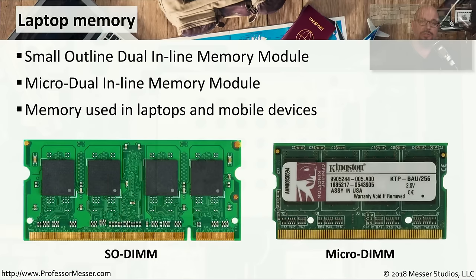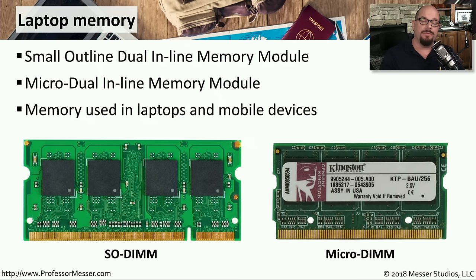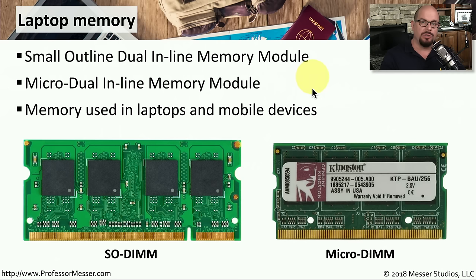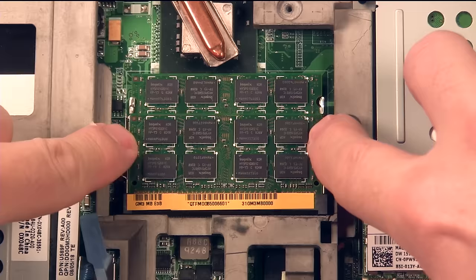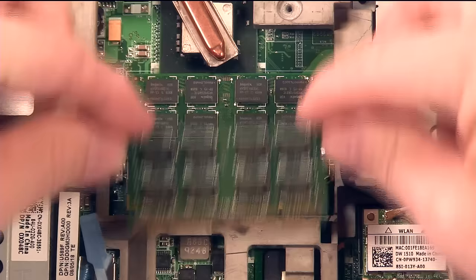Just as storage devices are smaller in a laptop compared to a desktop, the same is true for memory modules. Inside a laptop you might find a SODIMM or a MicroDIMM — small outline dual inline memory modules, or the smaller micro dual inline memory modules. These are almost exclusively used in laptops and smaller devices. There are two hooks on each side of the memory module that hold it in. Pulling those hooks out causes the memory module to pop up, and then you can grab it by the edges and remove it.